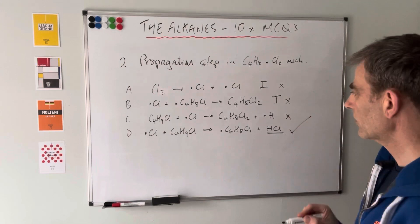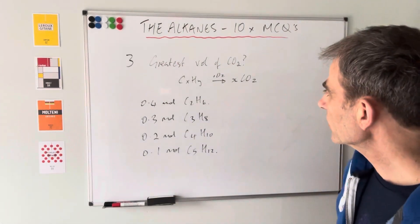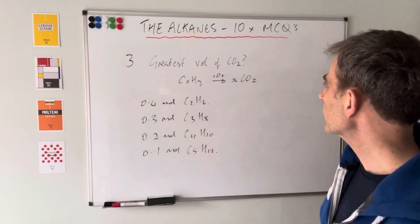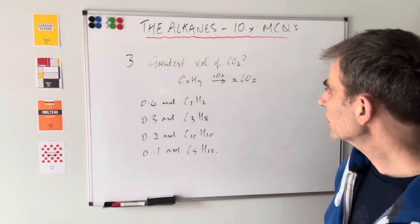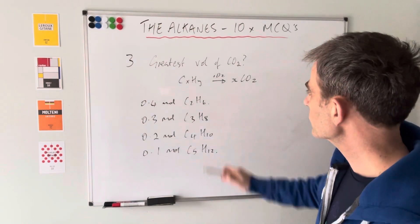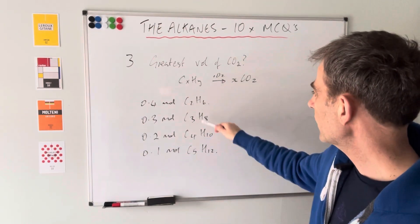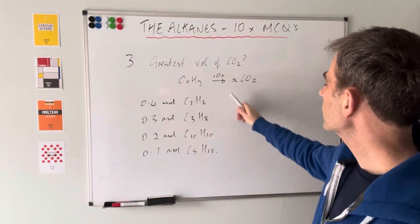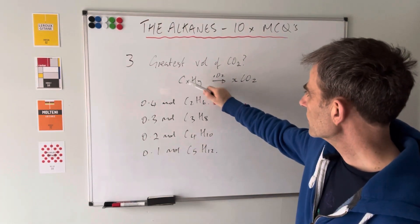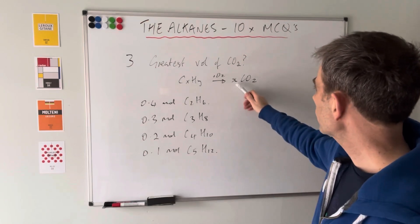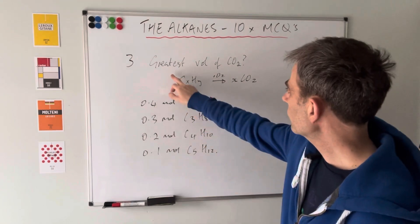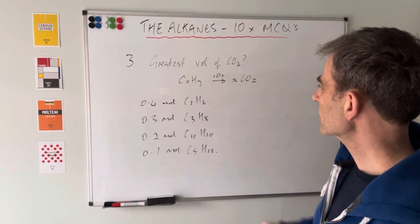Moving on to question three: which of these would produce the greatest volume of carbon dioxide at room temperature and pressure? I've done a very abbreviated combustion equation. These represent our different alkanes CₓHᵧ reacting with oxygen. The important thing to know is that whatever x is in the hydrocarbon, you get that many moles of carbon dioxide - so one mole of this would generate x moles of CO₂.